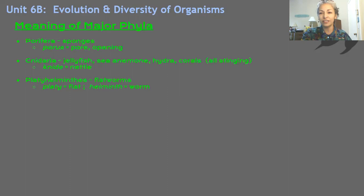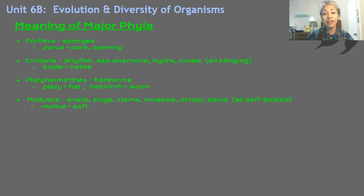Mollusca — that word comes from the root word 'mollus,' which means soft. You remember snails, slugs, clams, mussels, octopi, squid — these are all soft-bodied creatures. Mollus means soft. Mollusca: soft-bodied.